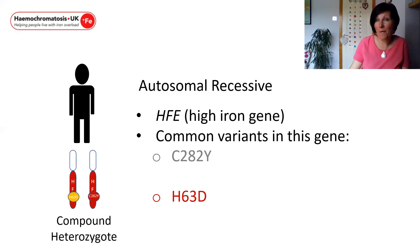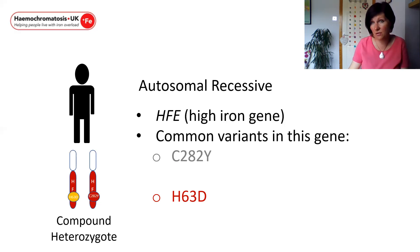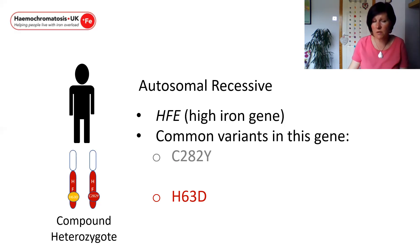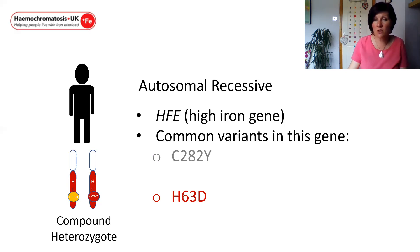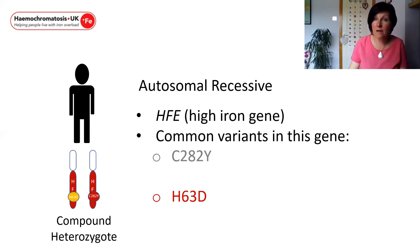Now let's think about a patient who might inherit one C282Y and one H63D. In this case the patient is a heterozygote because they have two different copies of the gene. But because they have a variant in both copies of their gene, we refer to them as a compound heterozygote. As you can see on the screen, the man has one copy with an H63D fault and one copy with a C282Y fault, meaning he doesn't have one full working copy of the HFE gene.